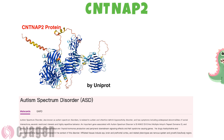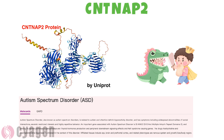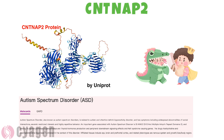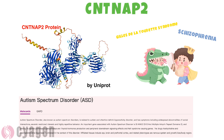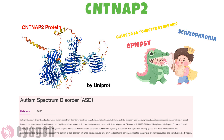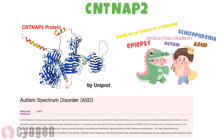CNTNAP2 is a transcription factor related to speech and language development. This gene has been implicated in multiple neurodevelopmental disorders, including Gilles de la Tourette syndrome, schizophrenia, epilepsy, autism, ADHD, and intellectual disability.